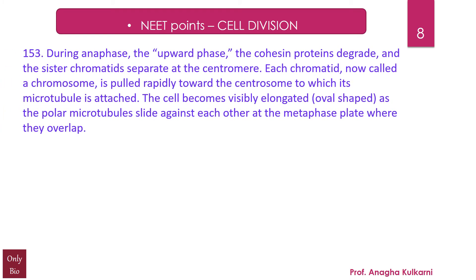During anaphase, the upward phase, the cohesion proteins degrade and the sister chromatids separate at the centromere. Each chromatid, now called a chromosome, is pulled rapidly towards the centrosome to which its microtubule is attached. The cell becomes visibly elongated as the polar microtubules slide against each other at the metaphase plate where they overlap.